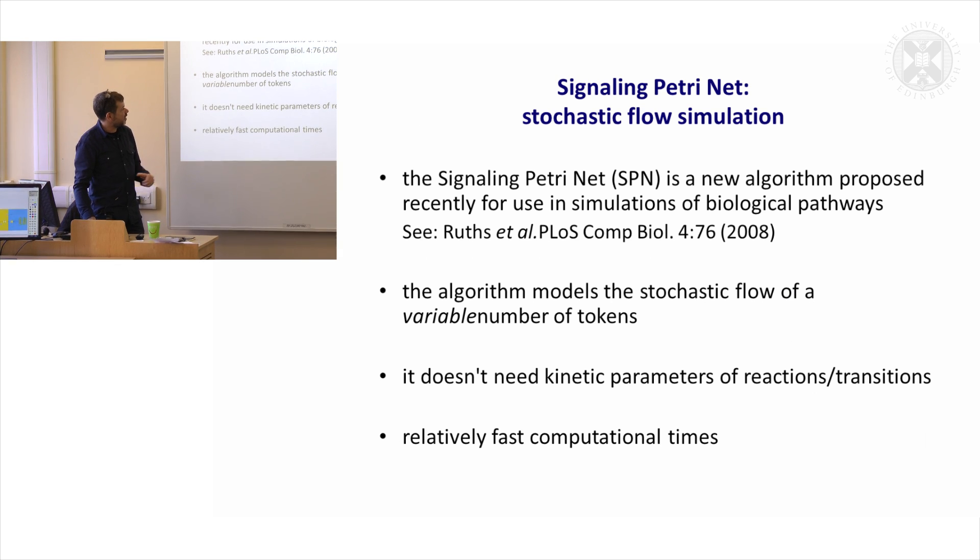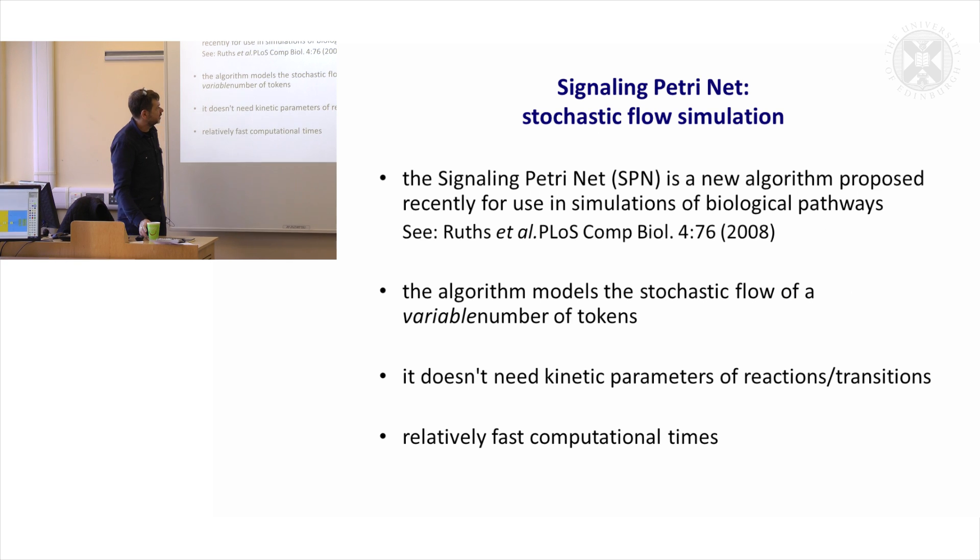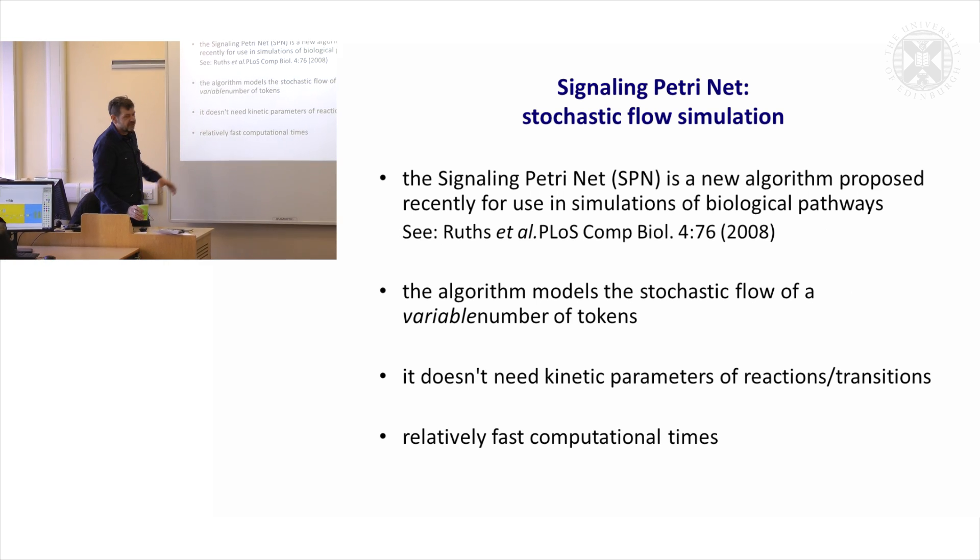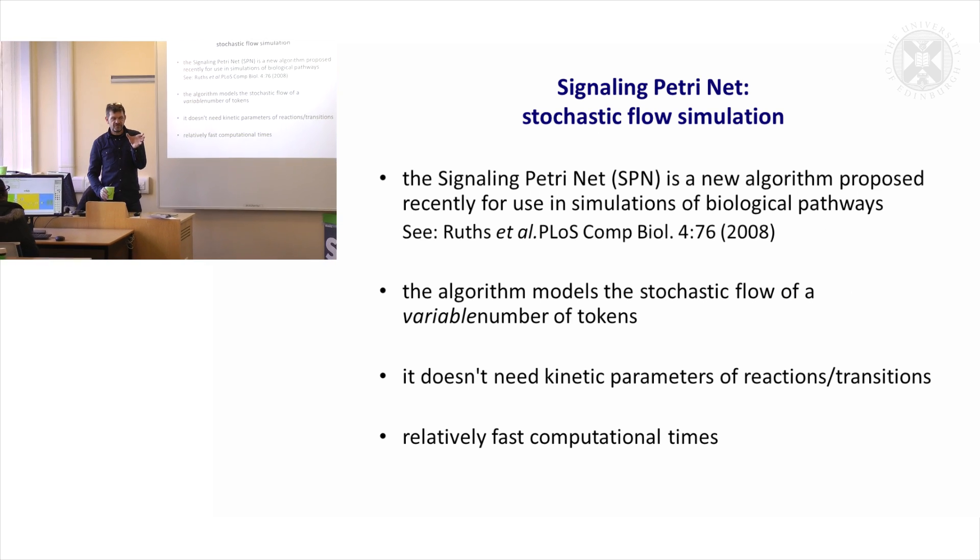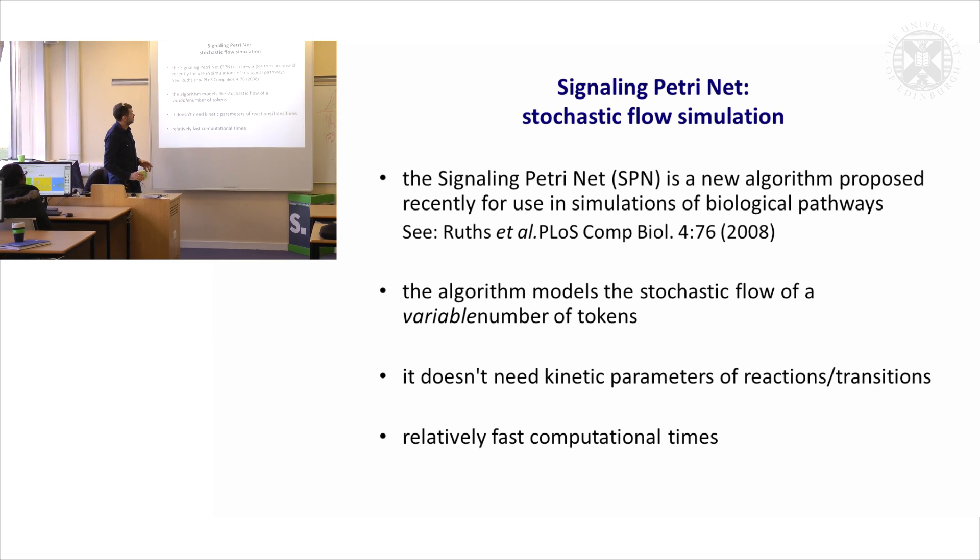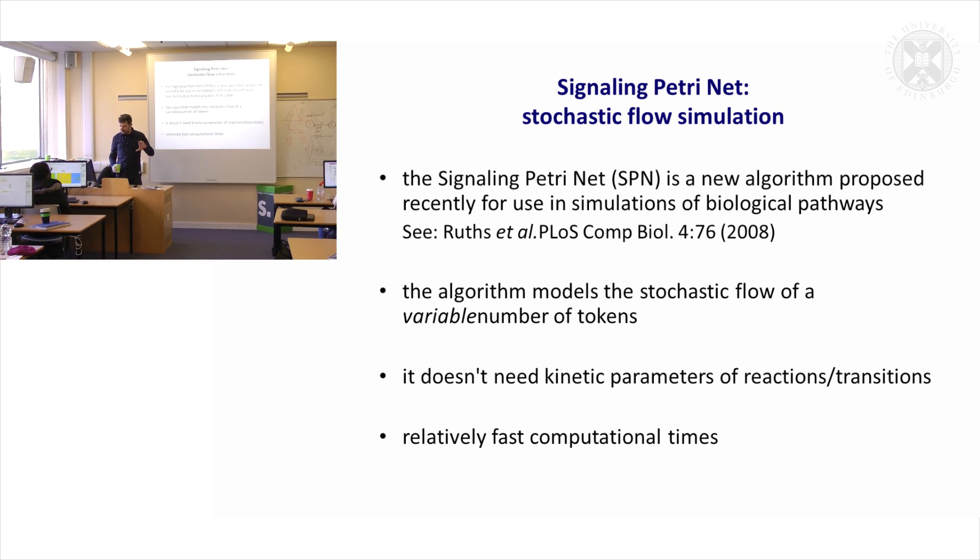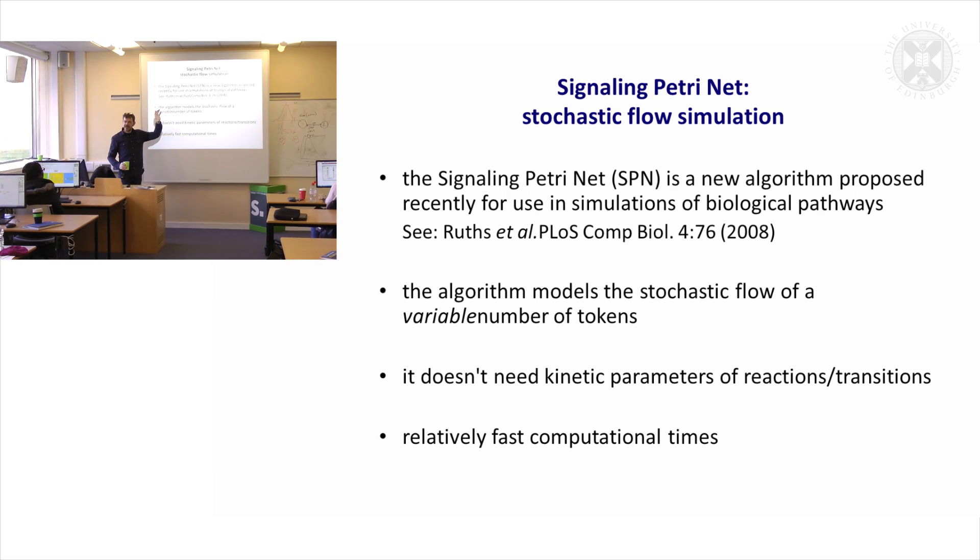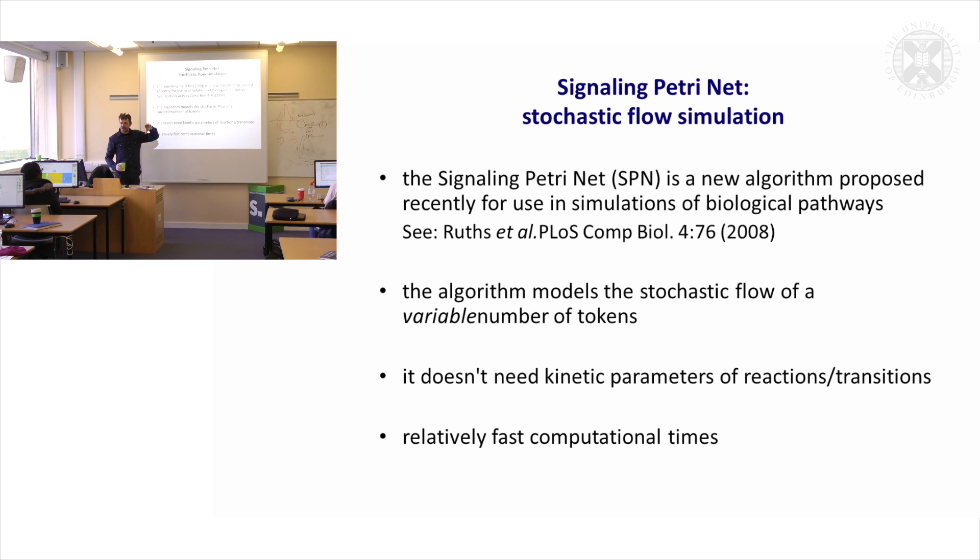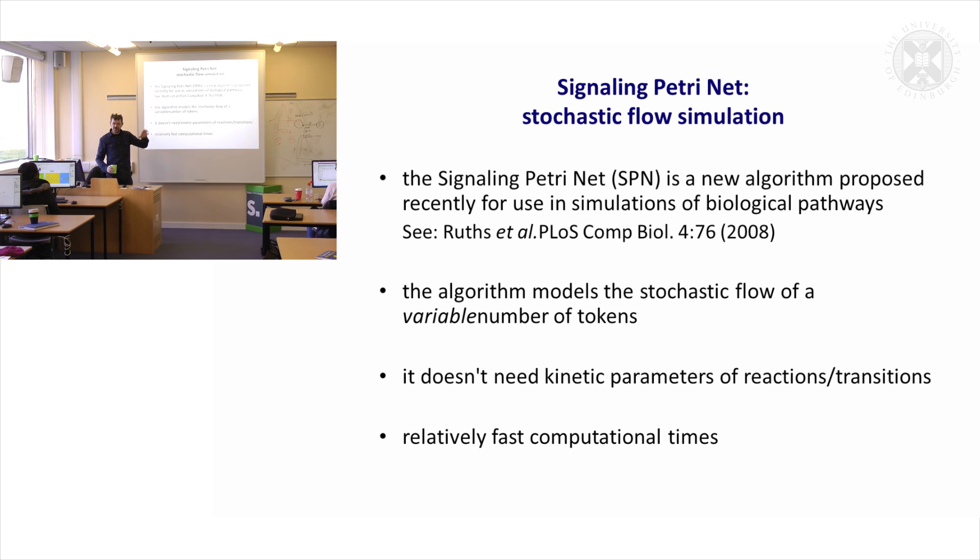There was this paper that came out in PLOS Computational Biology in 2008 and it reported a new algorithm for running Petri nets called the signaling Petri nets algorithm. It's a very nice paper and if you want to know more I would suggest you read about it. It will explain the maths behind it and how this algorithm compares to other modeling approaches.